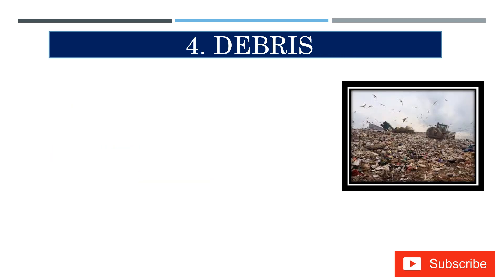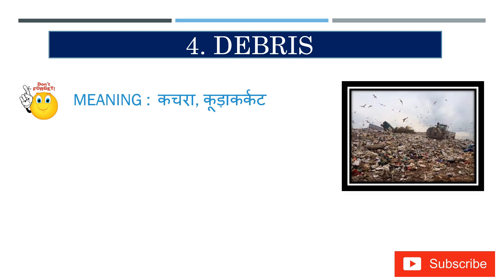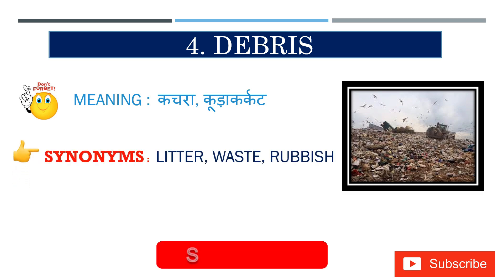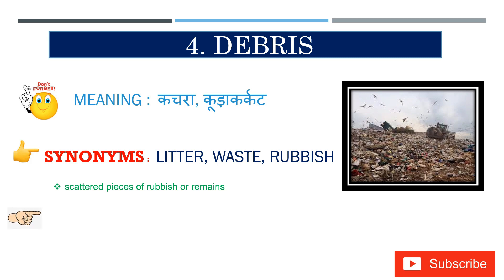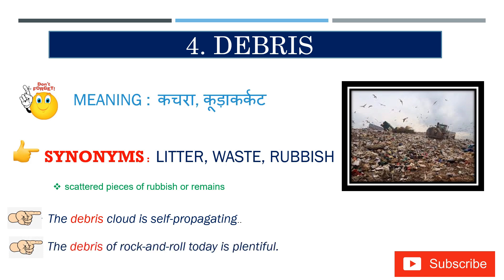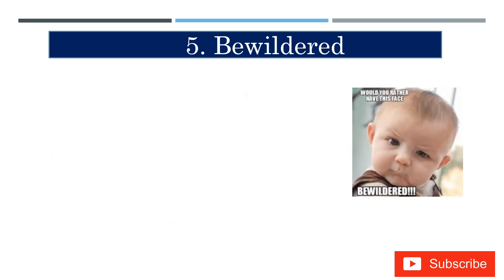The fourth word is 'debris.' Nowadays people use simple words like rubbish or litter. Instead of those, you can use debris — D-E-B-R-I-S. Don't forget the meaning — kachra, khuda in Hindi. Synonyms: litter, waste, rubbish. The definition: the scattered pieces of rubbish or remains left everywhere. Example sentences: 'The debris cloud is self-propagating,' and 'The debris of rock and roll today is plentiful.' This type of sentence can be used in writing.